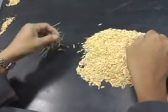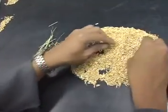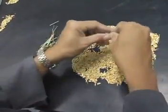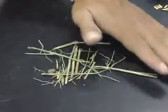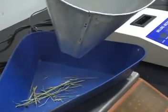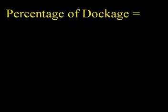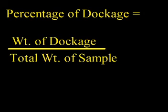Remove light foreign matter, stones, weed, and seeds from a 100-gram sample. Next, obtain the total weight and then compute the dockage percentage as follows: weight of the dockage from sample divided by the total weight of the sample, multiplied by 100.